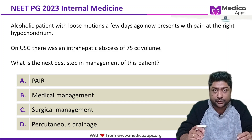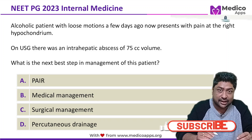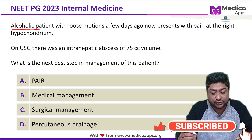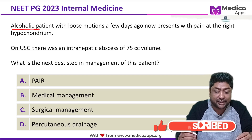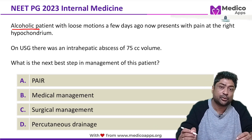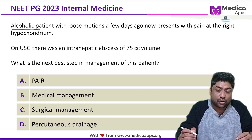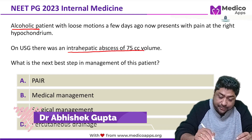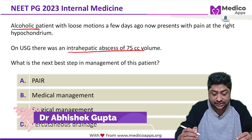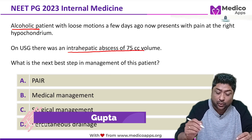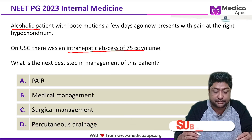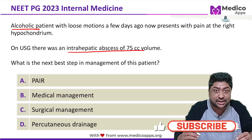This question appeared in NEET PG 2023. It talks about an alcoholic patient with loose motions a few days ago who now presents with pain in the right hypochondrium. On ultrasonography, there is an intrahepatic abscess of 75cc volume. What is the next step in management of this patient?